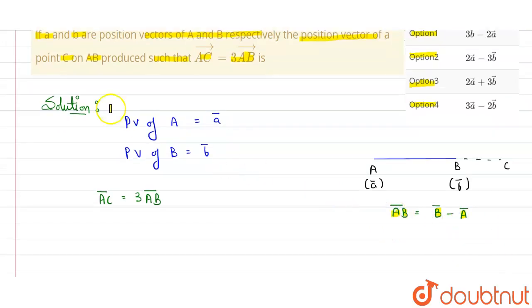So let's write here: AC can be written as vector C minus point A position vector is small A. It is equal to three times AB, which can be written as B vector, that is position vector of point B, minus position vector of point A, that is vector A.